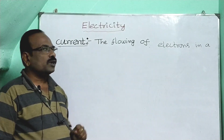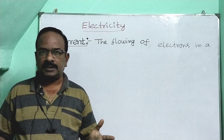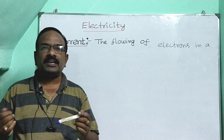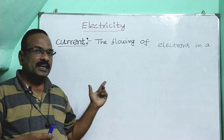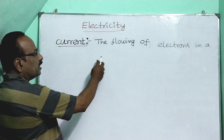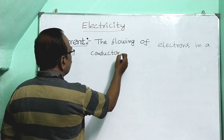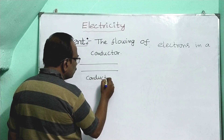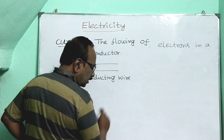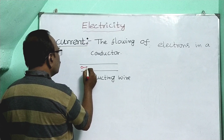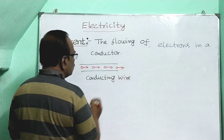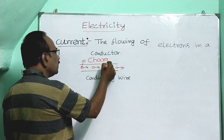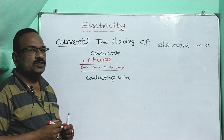Our lesson name is electricity. What is current? Current is the flowing of electrons in a conductor. In daily life you observe current coming on and off, power coming on and off. Current means the charge is flowing — the flowing of electrons in a conductor is called current. The charge flowing in your conductor is called current.